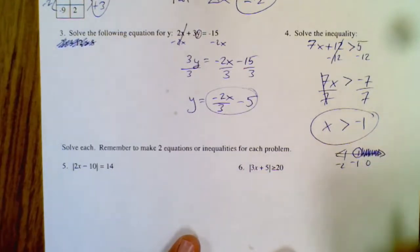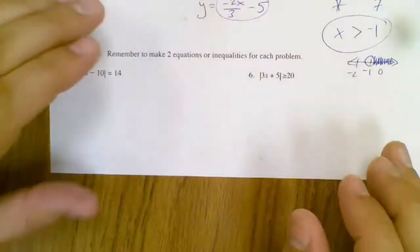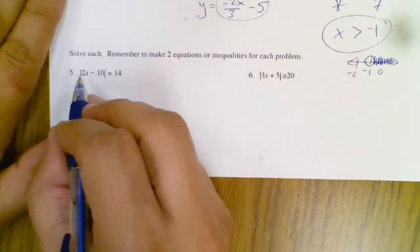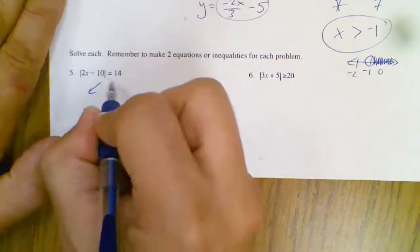Okay, now down here we have two absolute value problems. So one's an equal sign, one's a greater than. So we'll deal with the equal one first. So if these equal and it's by itself, you split it into two problems.